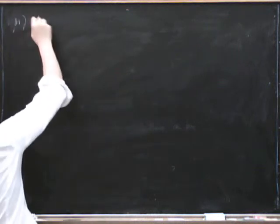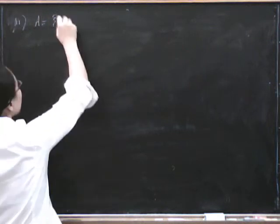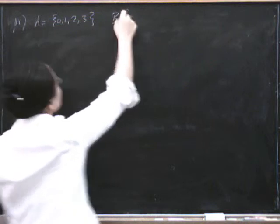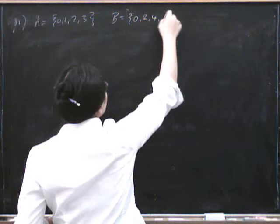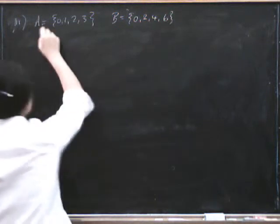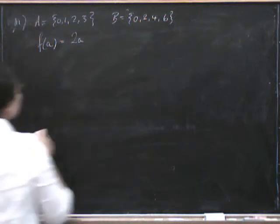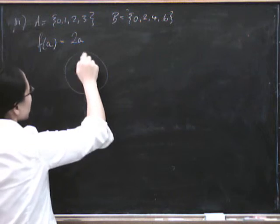If I put A to be 0, 1, 2 and 3 again, and put B to be 0, 2, 4 and 6, and I define F of A to be 2A, then we certainly get a function.